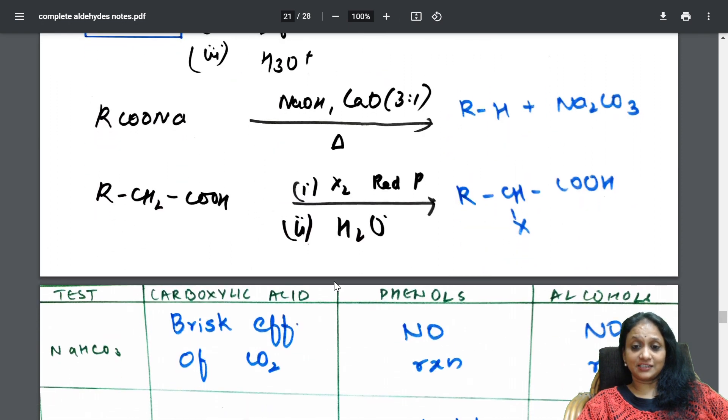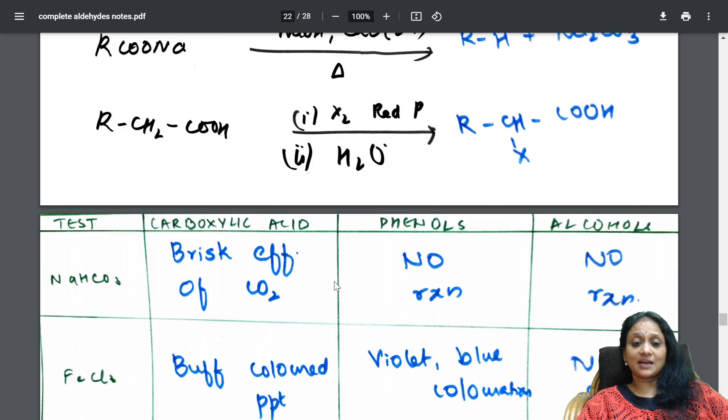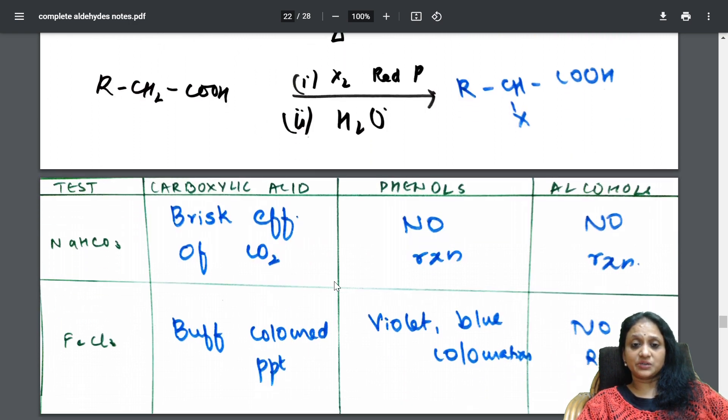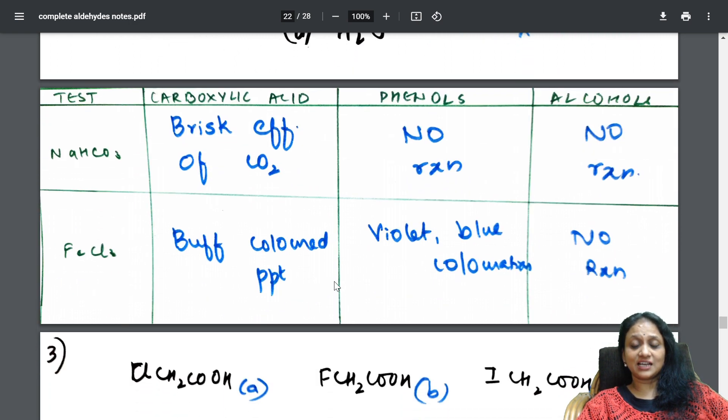Then, after that. Distinguishing tests. What happens when you distinguish between carboxylic acid, phenols and alcohols? This is what is a distinguishing test.